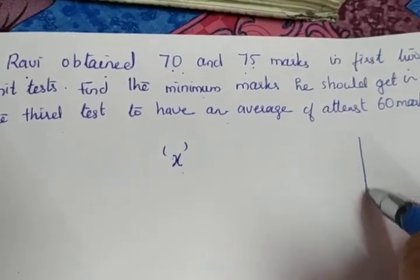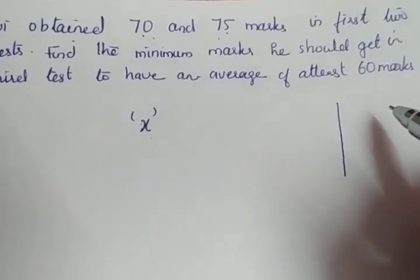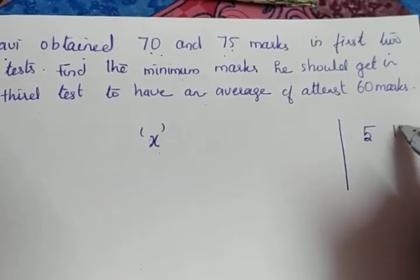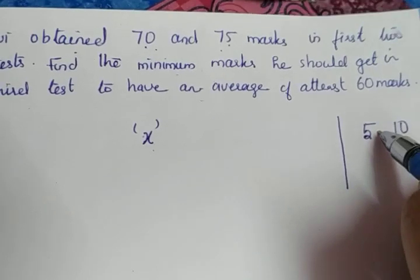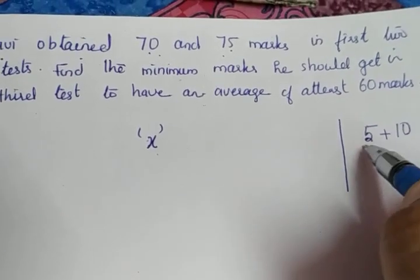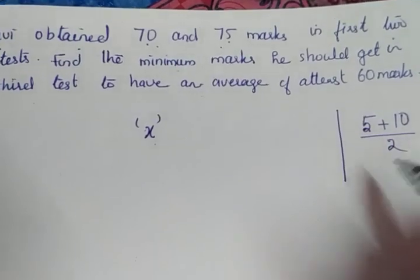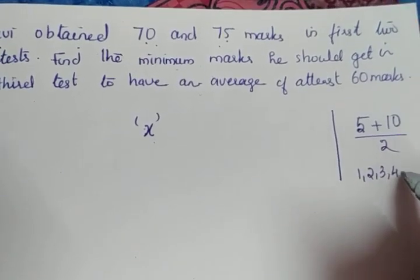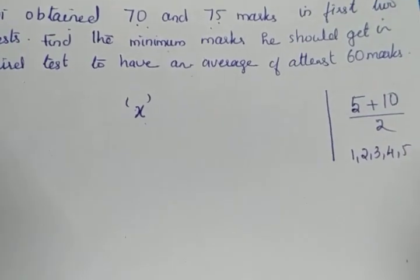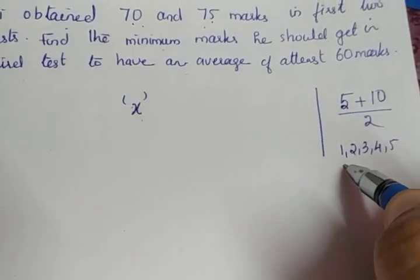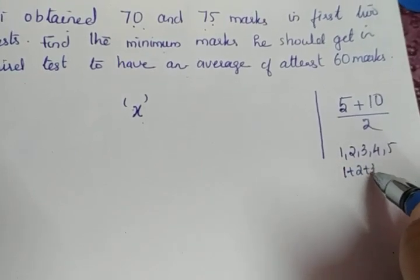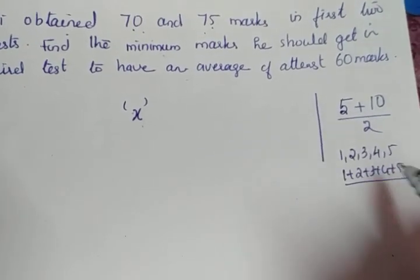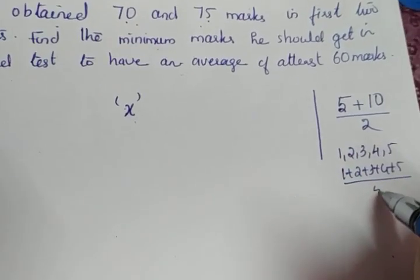How do we calculate the average? If I want to find the average of 10 and 15, I add these two numbers and divide by 2. If I want to find the average of 1, 2, 3, 4, and 5 — there are five numbers — I calculate 1+2+3+4+5 divided by how many numbers there are, which is 5.